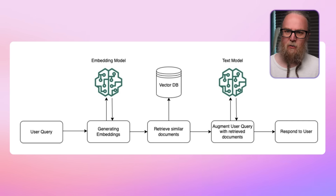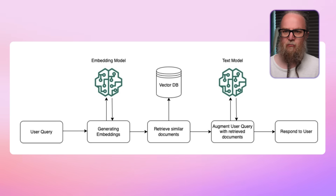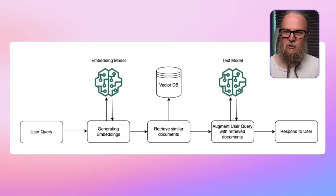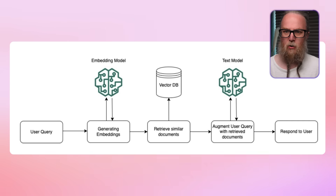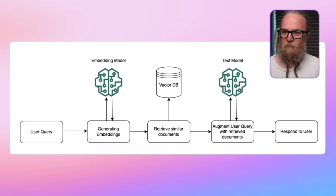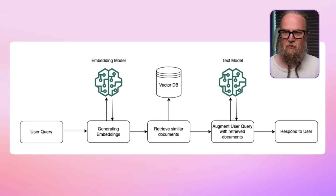We can dive deeper into how RAG works here. We've got document processing — we start by pre-processing documents from configured knowledge bases. These documents are split into chunks and are embedded into vectors using a specific embedding model. Following this, we have indexing, where these document vectors are then indexed in a vector database for efficient retrieval.